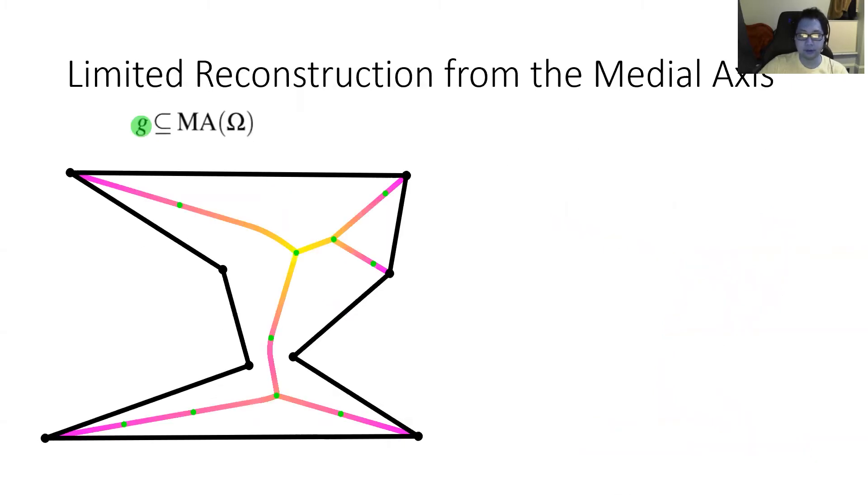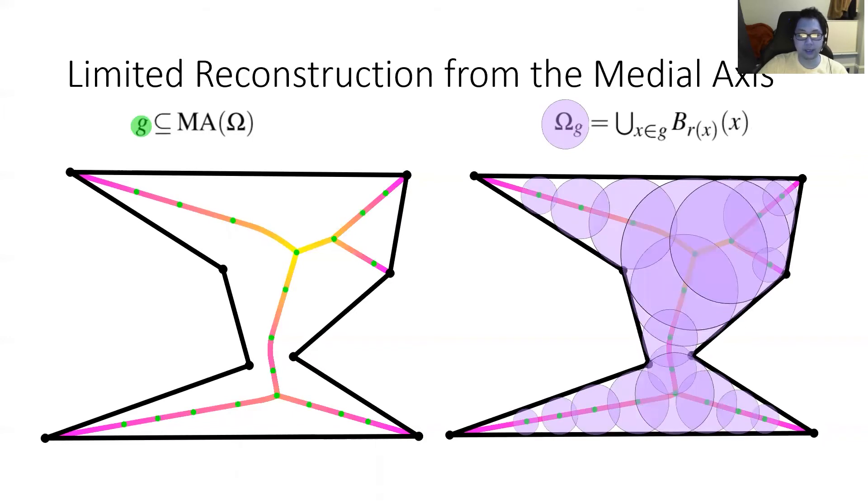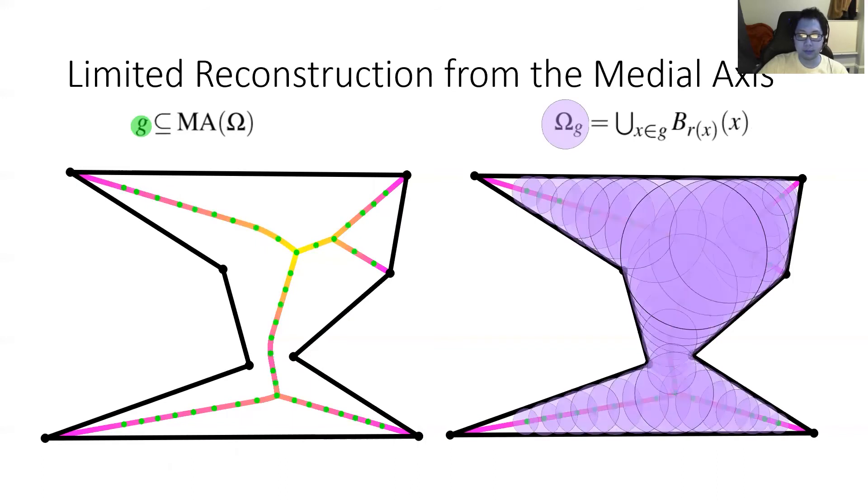We can now define the limited reconstruction from a subset of the medial axis. Let G be a subset of points of the medial axis, shown in green. Then the limited reconstruction is the union of balls centered on those points of the associated radius. In this example, the limited reconstruction is the union of all the purple balls. As you increase the number of points in G, the limited reconstruction begins to approach the original domain.